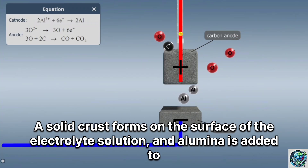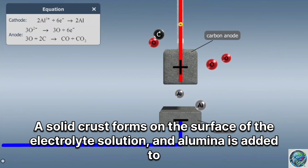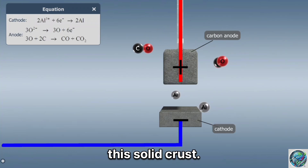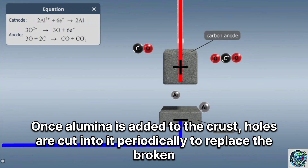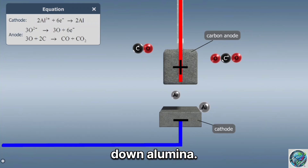A solid crust forms on the surface of the electrolyte solution, and alumina is added to this solid crust. This crust helps heat the alumina and prevents the electrolyte solution from losing heat. Once alumina is added to the crust, holes are cut into it periodically to replace the broken down alumina.